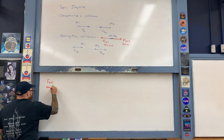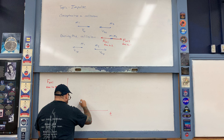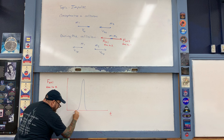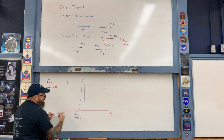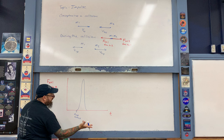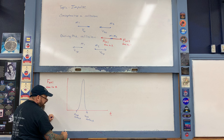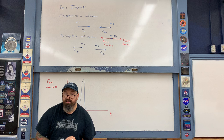The force on m1 due to m2 graphed as a function of time produces a characteristic spike shape. At the point of first contact the force is zero, it rapidly rises to a maximum as the elastic bands compress, then just as rapidly falls back to zero at the point of last contact as the carts separate. For very rigid objects, the total time from first to last contact is typically on the order of a few milliseconds.